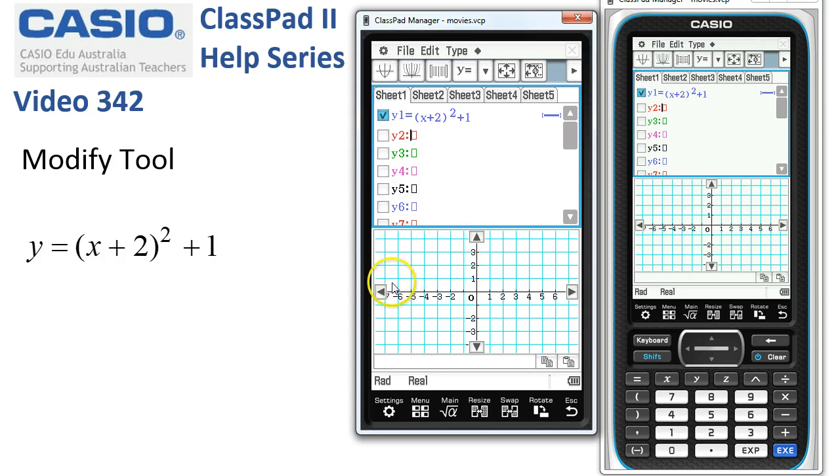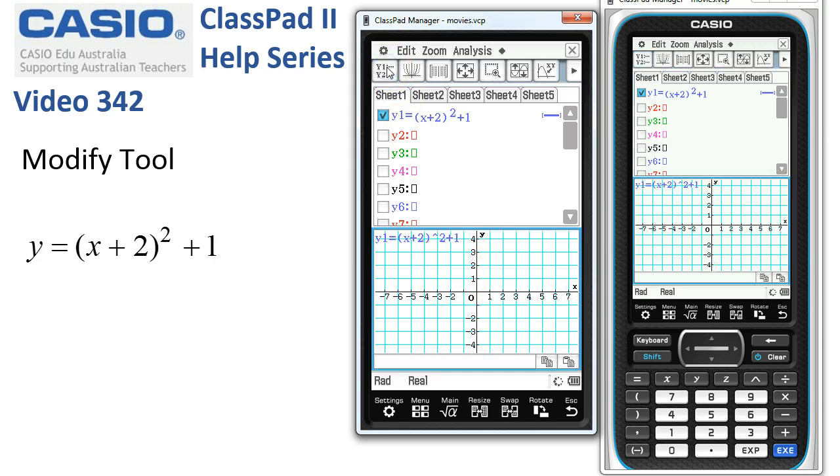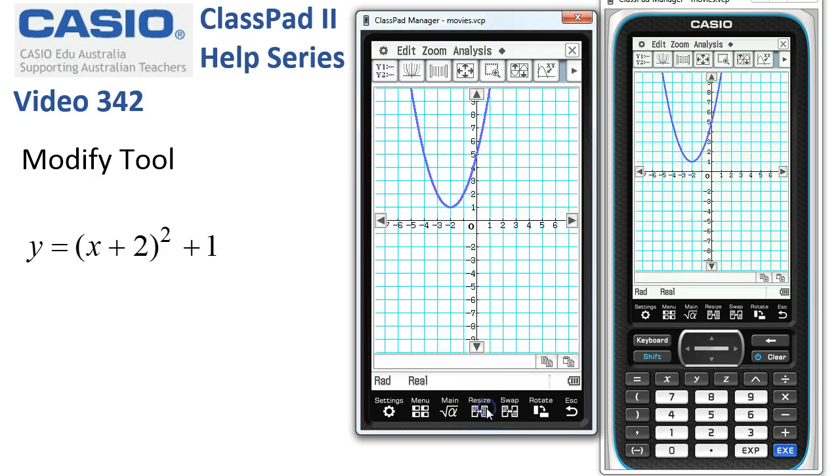Now you'll notice we've got the graph controllers and these act like on-screen cursors. For use with what we're going to do, they're the only way to actually work it. We'll draw the graph, tap on to draw the graph, hit resize, and then tap analysis and the very bottom option is modify.